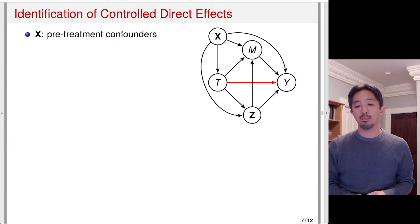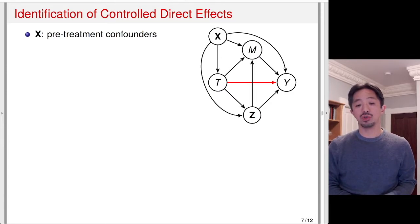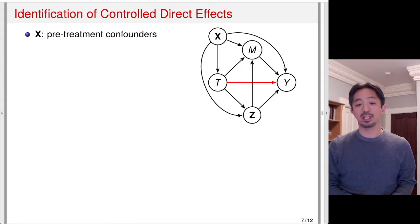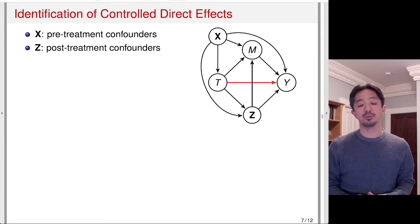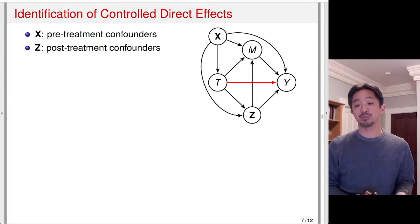Here I have a more complicated DAG where I have, in addition to treatment T, mediator M, and outcome Y, I have pretreatment confounders X. This confounder is affecting T and M and Y. In addition, it also affects Z, which are the post-treatment confounders. Z is called a post-treatment confounder because it is also affected by the treatment, whereas X is a pretreatment confounder, so it is causally prior to the treatment.